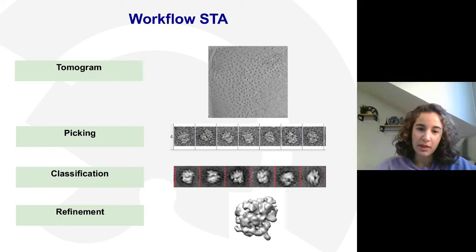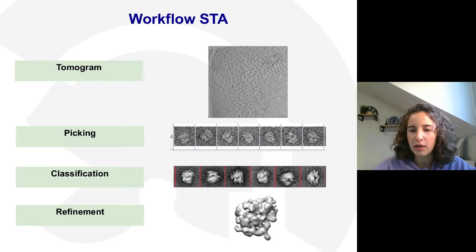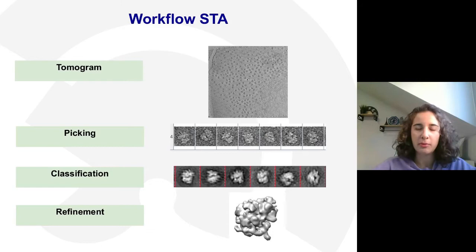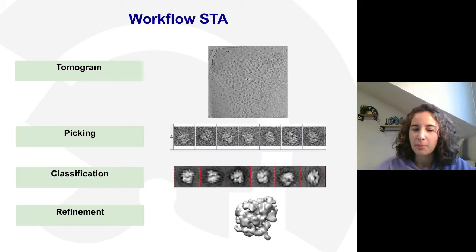Once we have extracted our subtomograms we are going to perform some classification. You saw yesterday some classification using PySeg, and today we are going to see other ways to perform this classification. We want to do classification in order to remove particles that are badly picked or that don't look good enough, as they would blur our model instead of improving it. At the end we are going to do the refinement, which usually has two steps: creating an initial model and then refining that model to get a better resolution map.